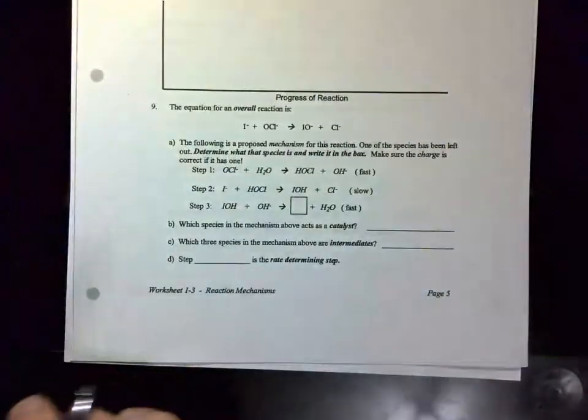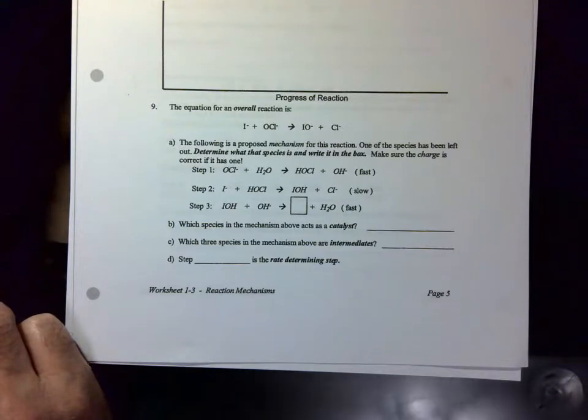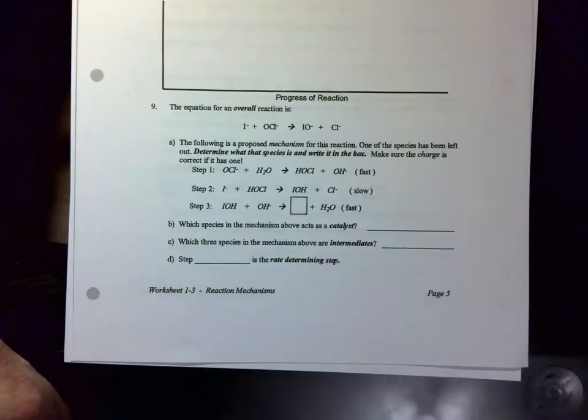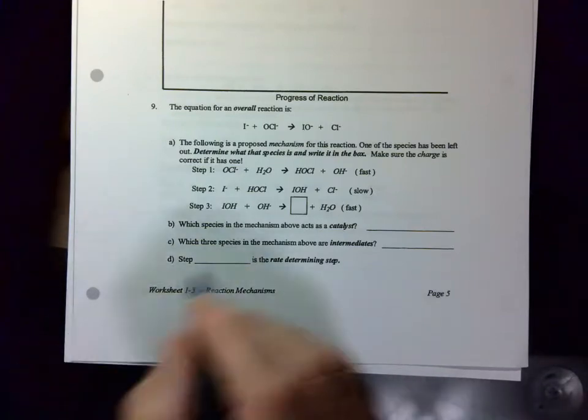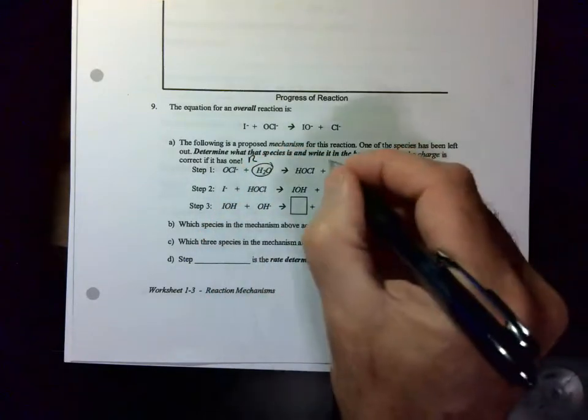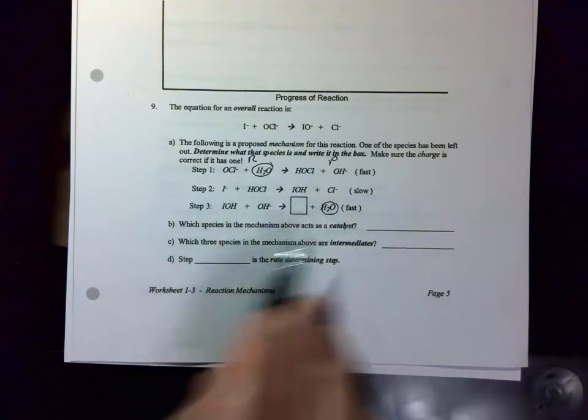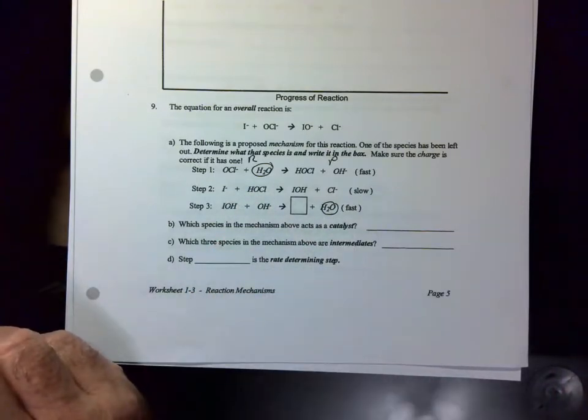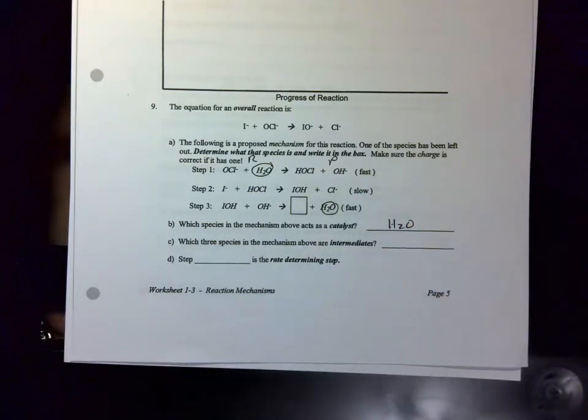In question number nine, it asks you what is missing. Well, first of all, let's go through all the questions, then we'll fill in this box here at the end. So first of all, let's look for a catalyst. A catalyst is something that's found in the opening reactant column and then can be found at the end, meaning at the end of the reaction it's still there. So H2O acts as a catalyst in this reaction.